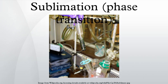The reverse process of sublimation is desublimation, or deposition. At normal pressures, most chemical compounds and elements possess three different states at different temperatures. In these cases, the transition from the solid to the gaseous state requires an intermediate liquid state.